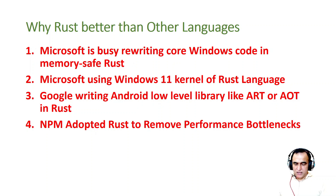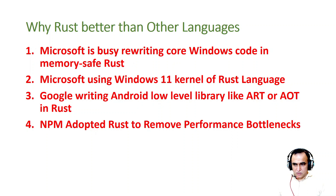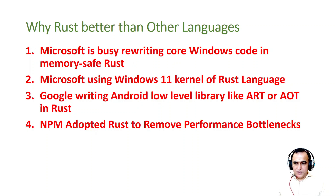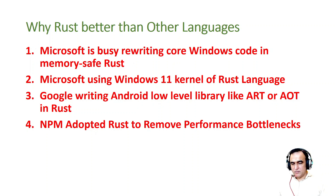Google is writing Android low-level libraries like ART and AOT in Rust. Android has C language at its low level, and on the basis of C it runs Java. The core of Android is C because it's based on the Linux operating system, and Linux is built in C. That's why Google earlier used C for Android, but now step by step Google is converting the C-built ART, AOT, and other low-level library drivers used in Android into Rust.